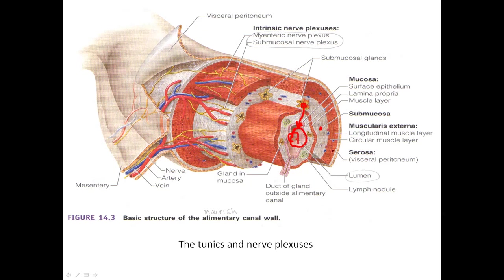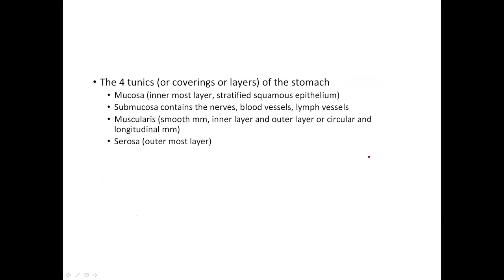The next layer out is the muscle layer — a type of muscle under autonomic control that contracts on its own when food is present. Then you have the outside layer, the serosal layer. In the submucosal layer, this is where you find the nerves, blood vessels, and lymph vessels.